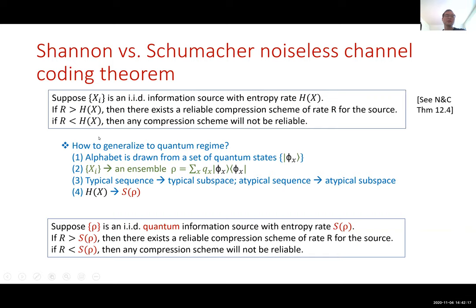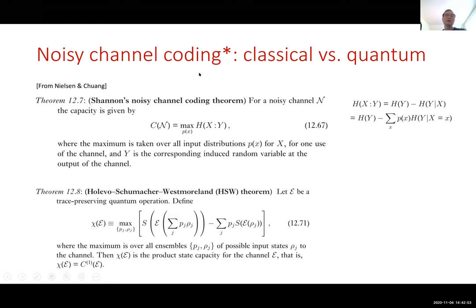The connection between the classical and quantum cases is through four points. To go to quantum, you use an alphabet drawn from quantum states — the source is replaced by an ensemble. The notion of a typical sequence is generalized to a typical subspace, and the Shannon entropy is replaced by von Neumann entropy. That's the noiseless channel coding theorem.